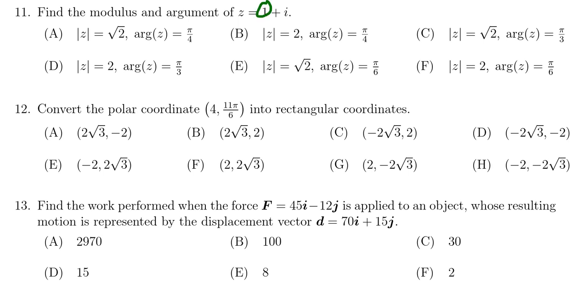So we have this complex number whose real part and imaginary part are both 1. In terms of finding the modulus, the length of the vector, thinking of the complex number as a vector, we see that the absolute value of z equals the square root of 1 squared plus 1 squared. So we get the square root of 2.